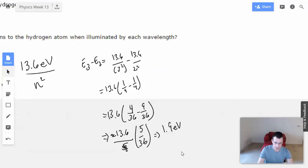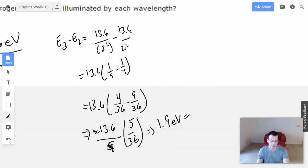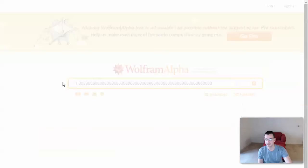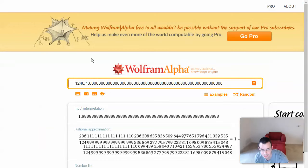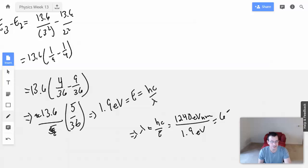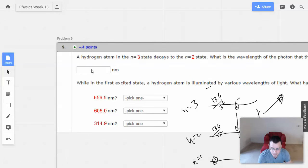So, we've got 1.9 electron volts given off. Now, we need to convert that into a wavelength. So, E equals energy given off, which is hc over lambda. Therefore, lambda equals hc over energy, which is 1240 electron volts nanometers over 1.9 electron volts. So, let's do 1240 divided by 1.9. And that will give us 656.47 nanometers.